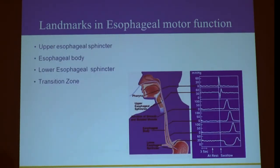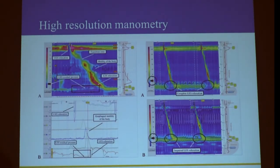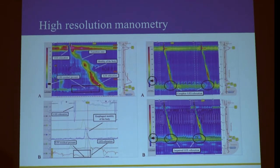The main landmarks we can now easily see — not only us but the nurse doing the study — include the upper esophageal sphincter, lower esophageal sphincter, the transitional zone, and of course the peristalsis or lack thereof. With the new Chicago classifications, a group from Pandolfino in Chicago came up with them. We can now even tell if patients are having breaks or defects in that transition zone, which helps determine what is accounting for all the symptoms your patients have.